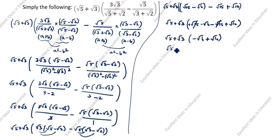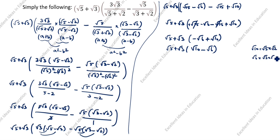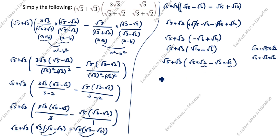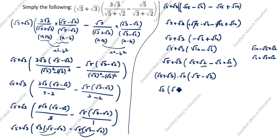So we rearrange: root 5 plus root 3 times (root 10 minus root 6). We split these: root 10 is root 5 times root 2, and root 6 is root 3 times root 2. So we have root 5 plus root 3, open the bracket, root 5 times root 2 minus root 3 times root 2. Root 2 is common, so we take it outside: root 2 times (root 5 minus root 3), multiplied by (root 5 plus root 3).